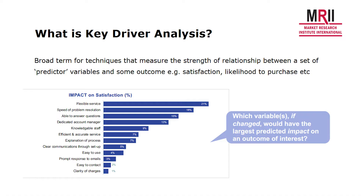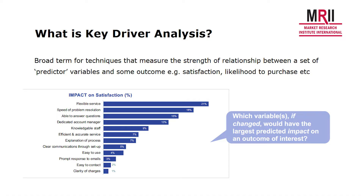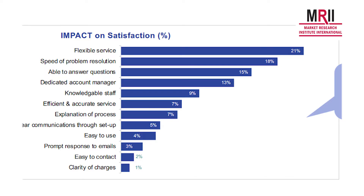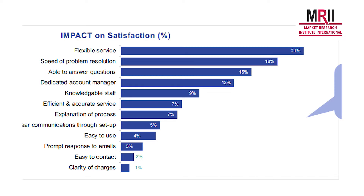We'll represent that in different ways. Here you can see a graph that simply shows in percentage terms how the total impact on satisfaction is distributed amongst these attributes. These percentages sum to 100. So this is saying that 21% of the total impact on satisfaction comes from having a flexible service. You've got a hierarchy there — you can identify the most important things quite easily.